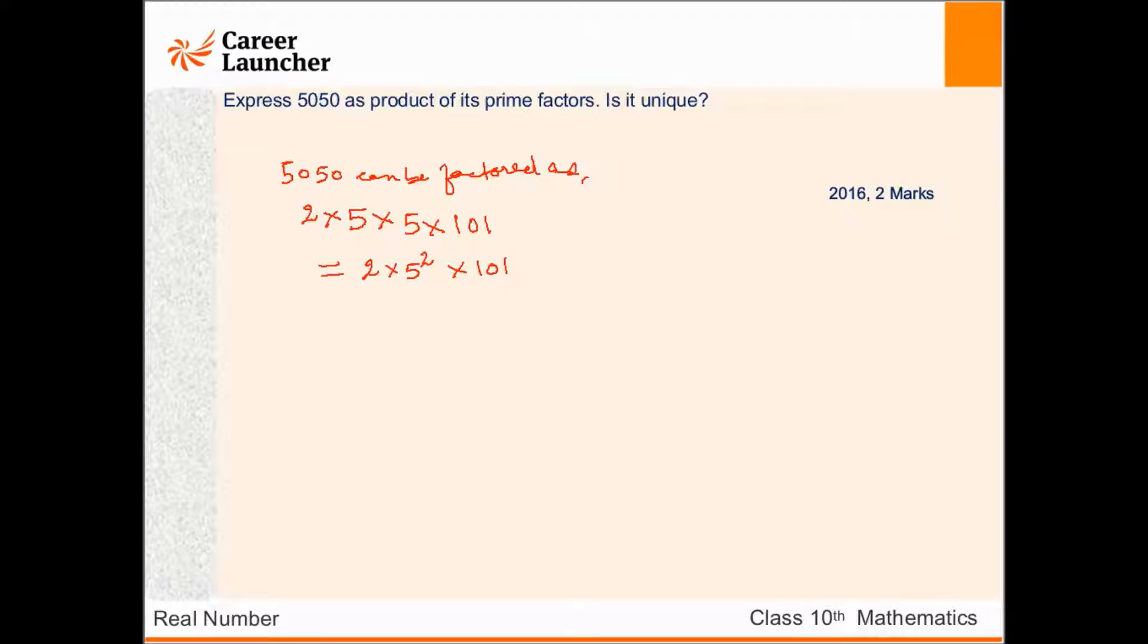And this is unique because there is no other way we can write this. So here you get this is one mark, and writing yes it is unique, identifying this and then writing yes it is unique, this factorization is unique, you get one more mark.